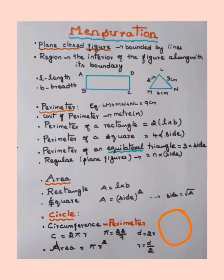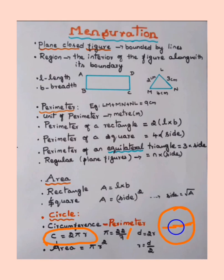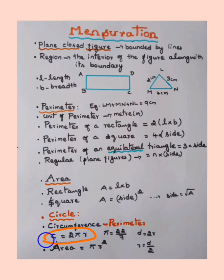For a circle, the circumference — which is the perimeter of the circle — is calculated as C = 2πr, where π = 22/7. The radius is the line from the center to the circumference, and it is half the diameter. Diameter = 2r, and radius = diameter/2.